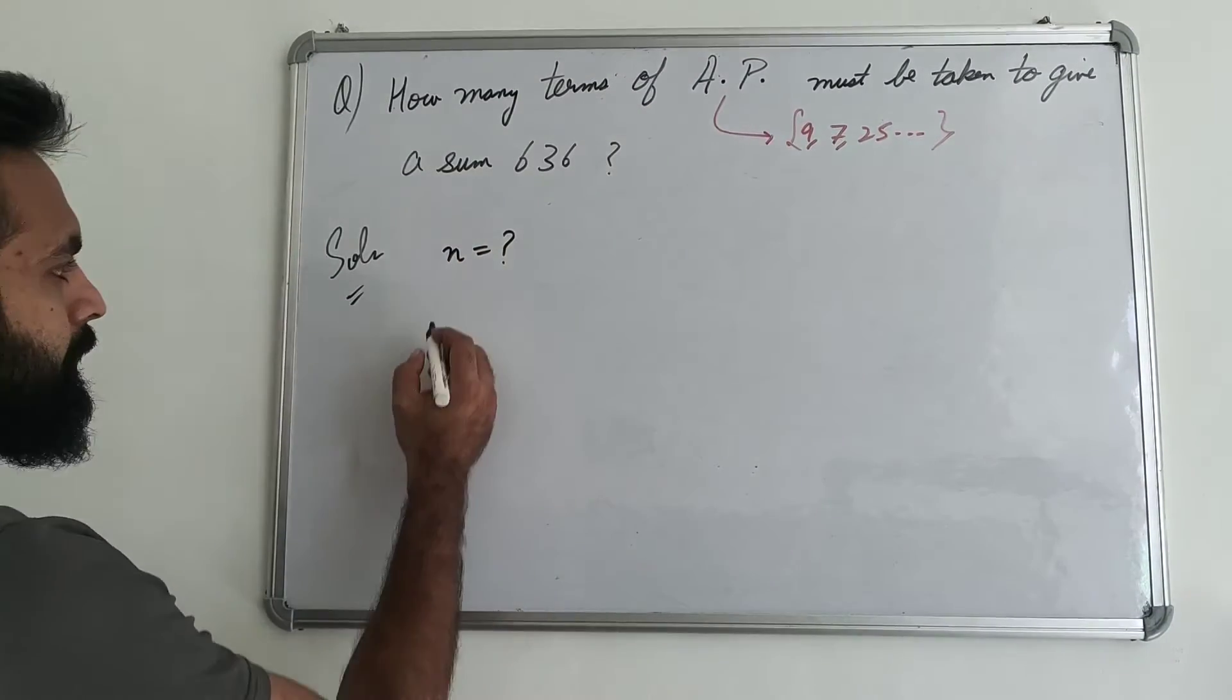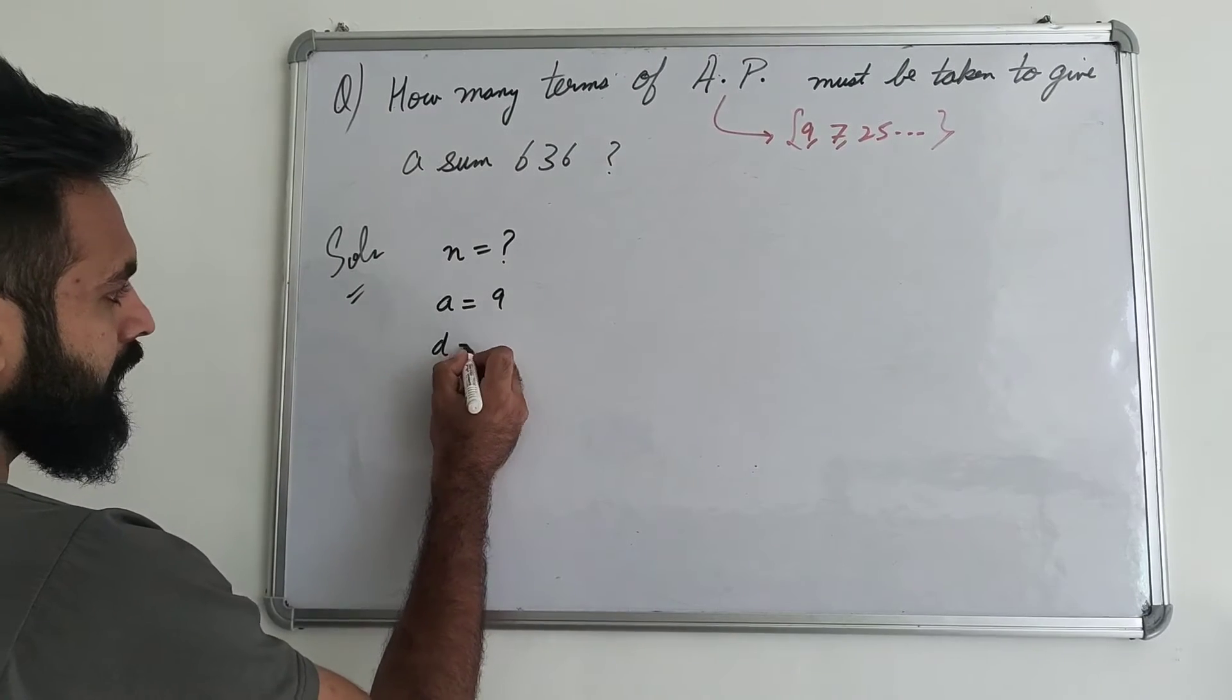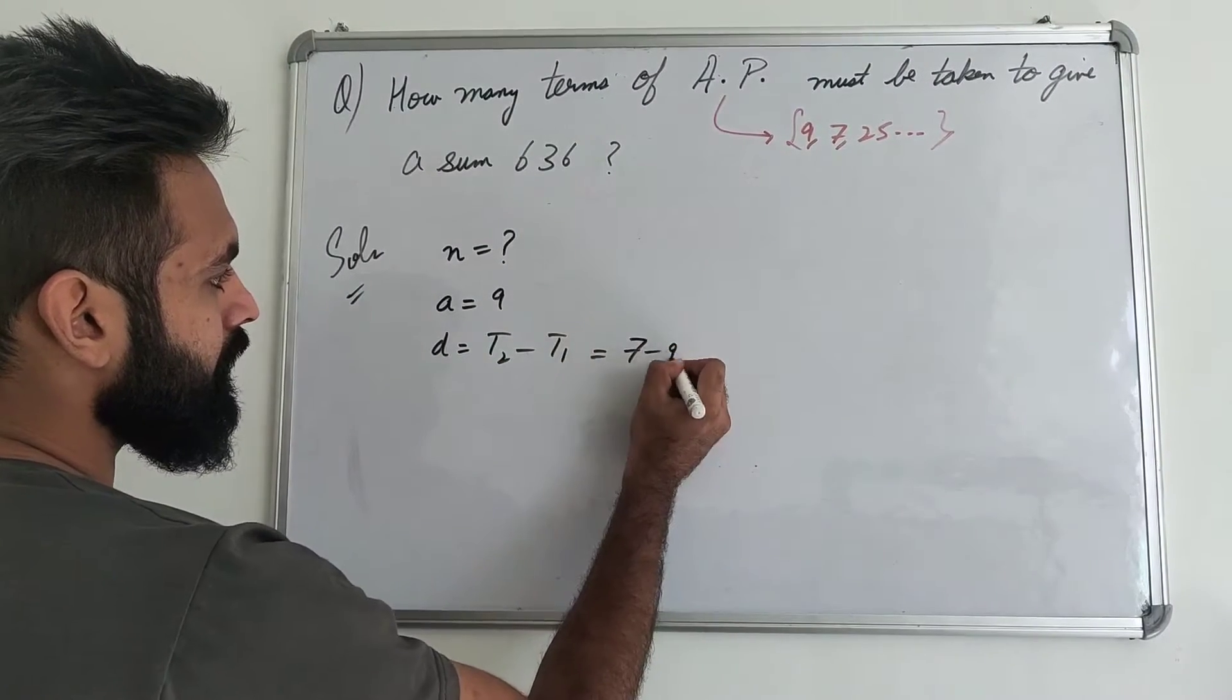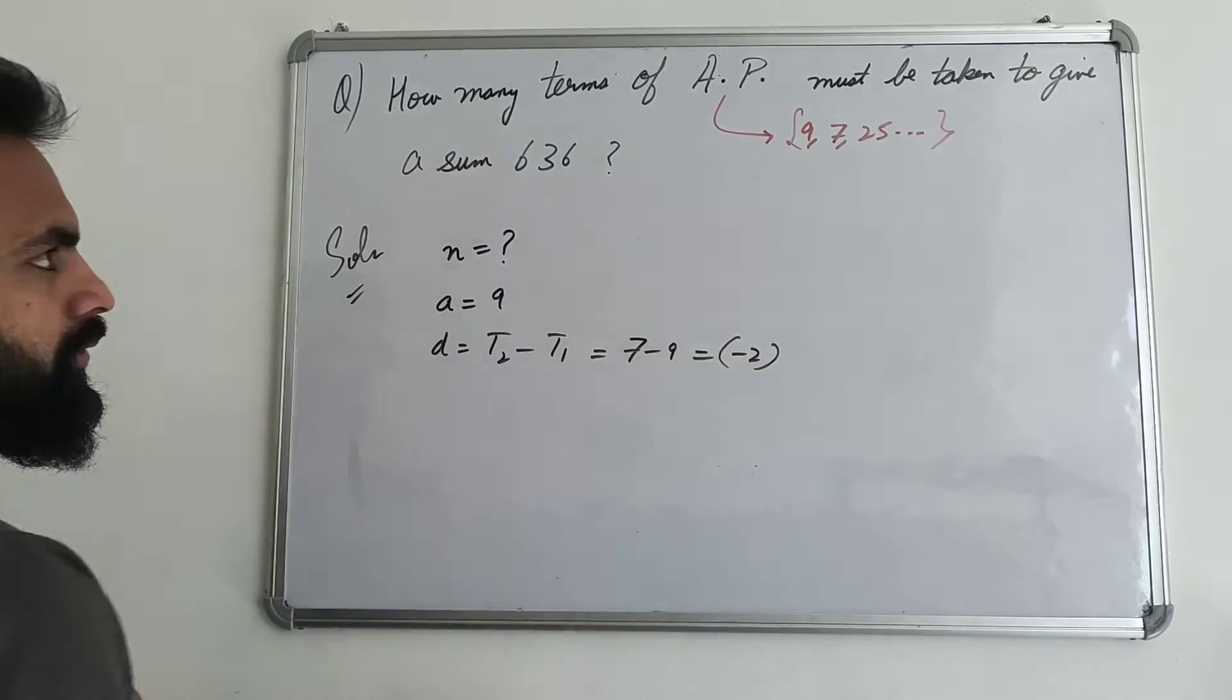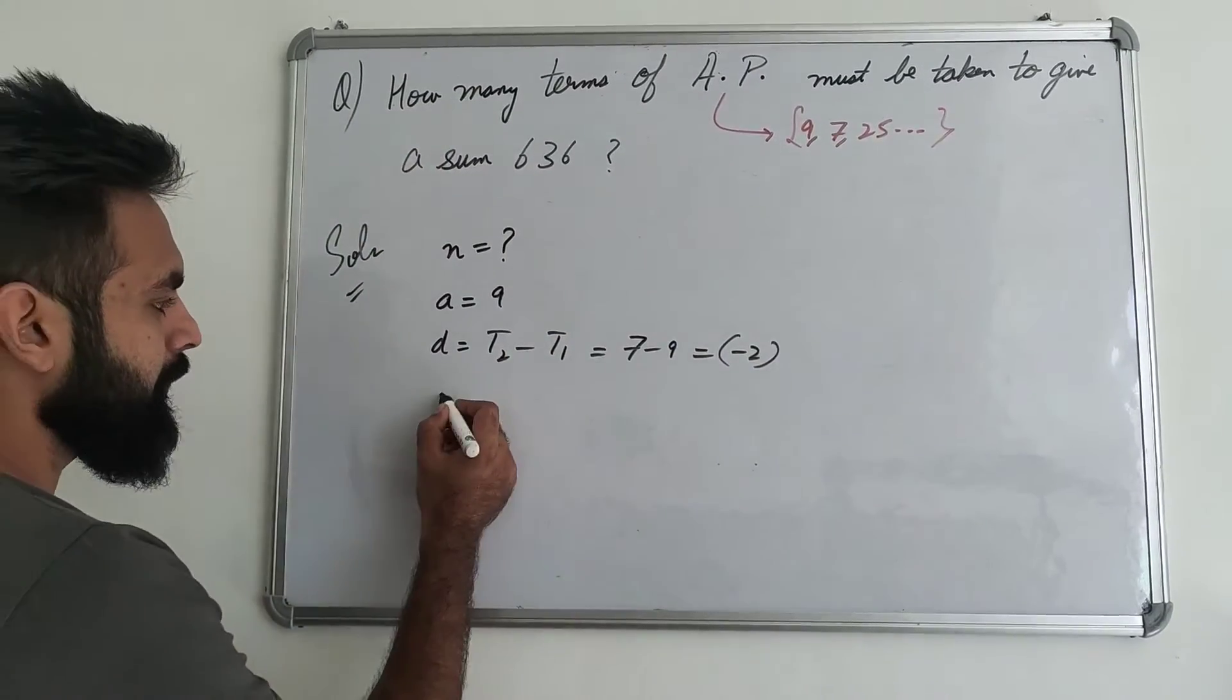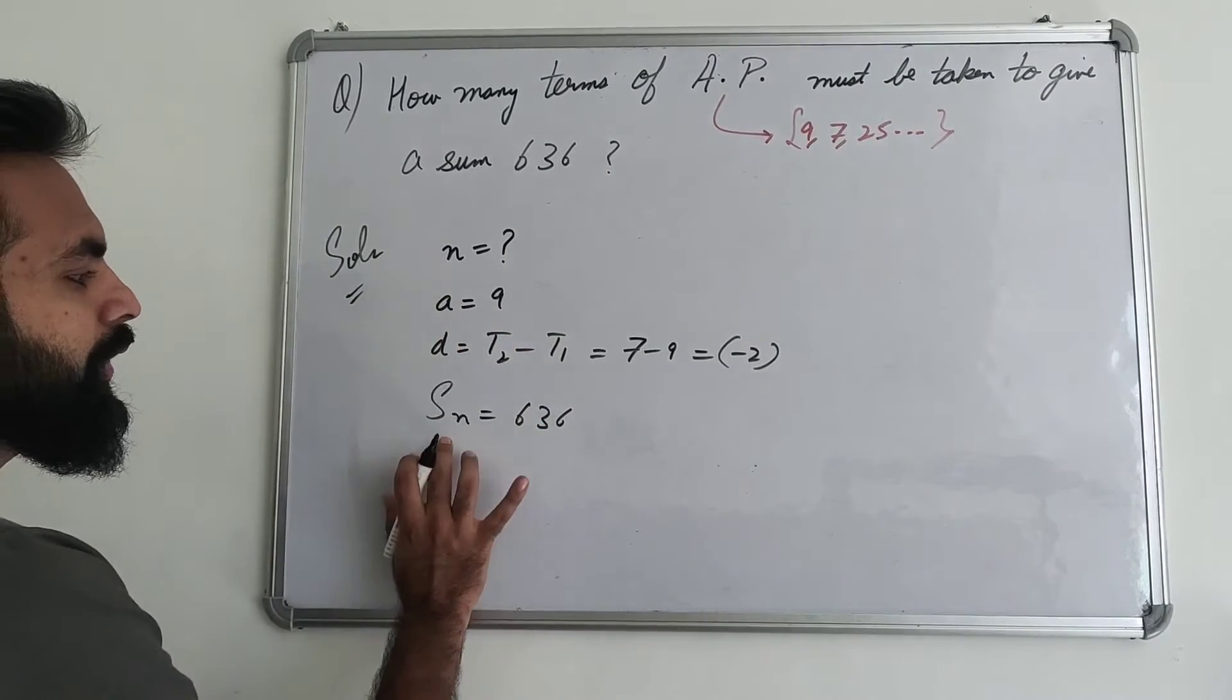AP is given, that means first term is given is 9. And the common difference, if AP is given, that is T2 minus T1, 7 minus 9. Why would it be minus 2? Must be taken to give a sum of 636. That means SN is given, you have 636. Why I wrote about SN? I don't know anything about N. So I will write about SN.